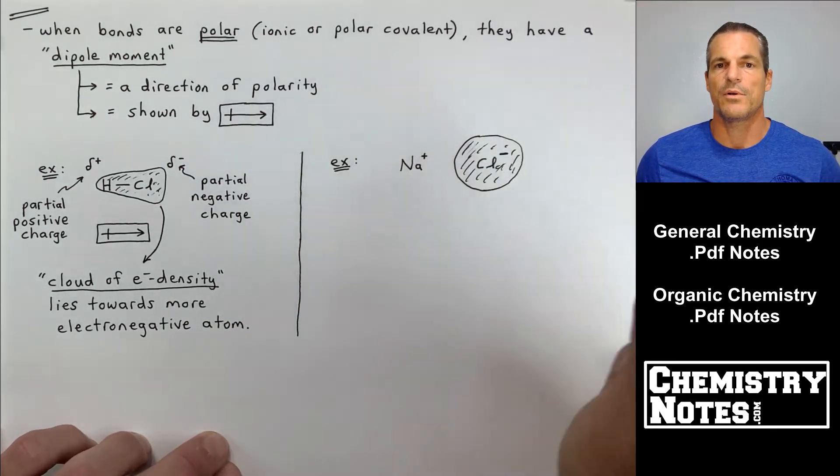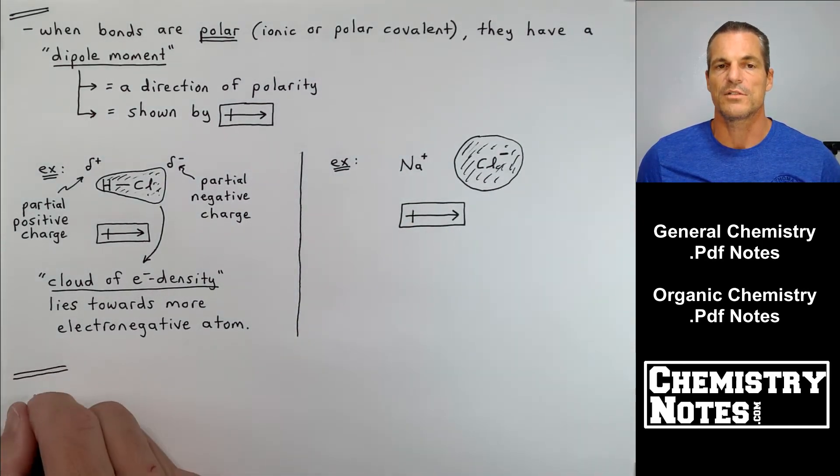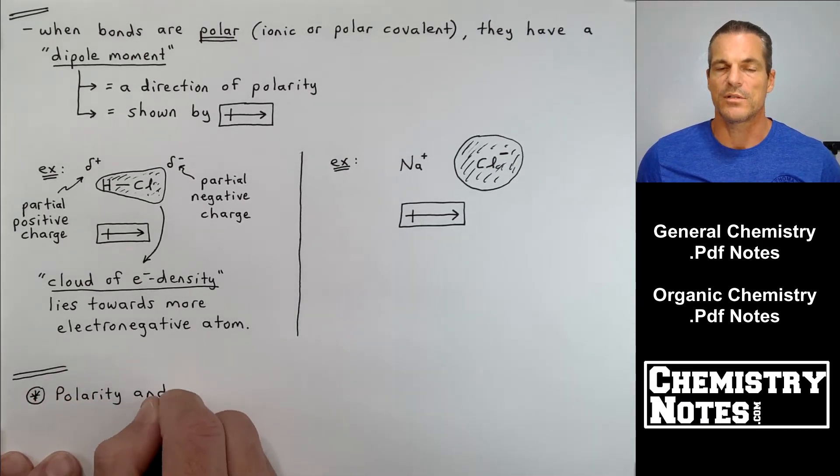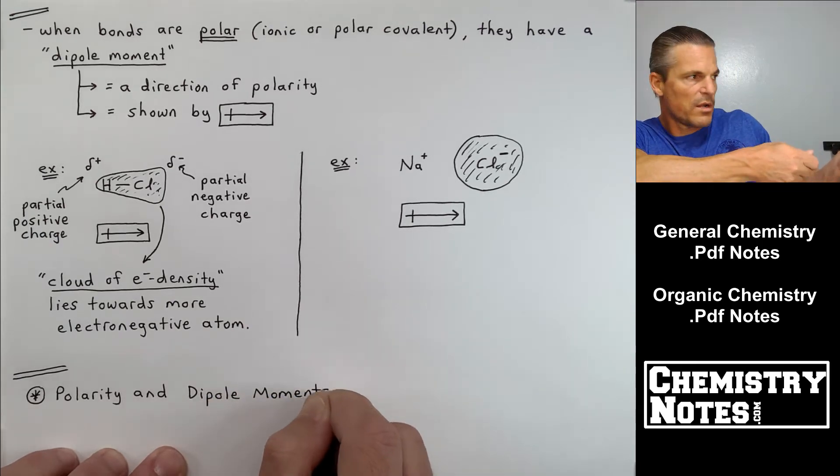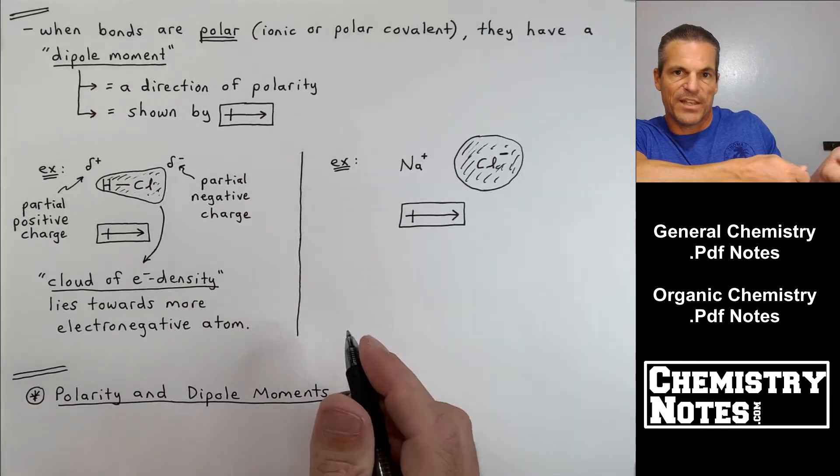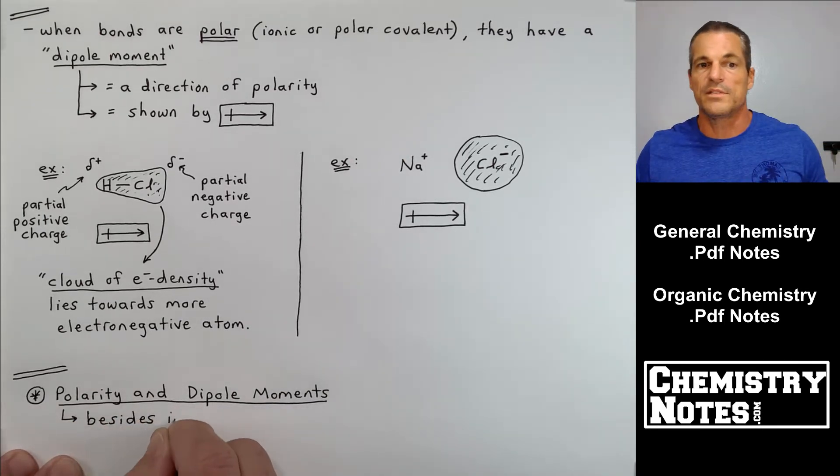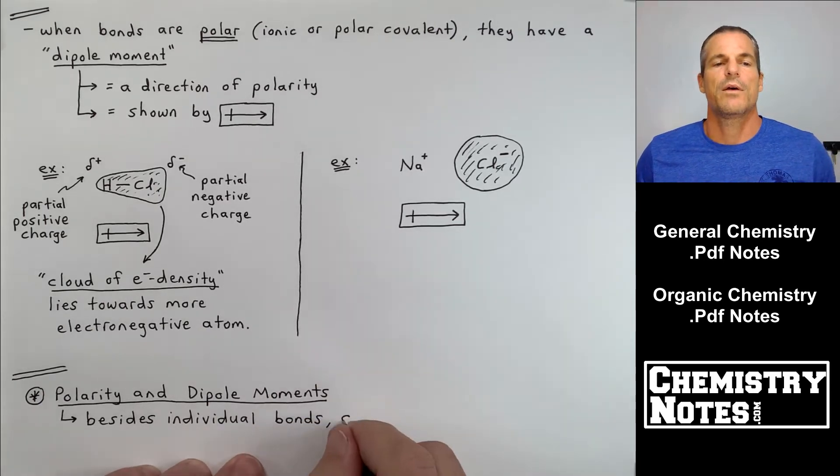So partial positive charge on the left, partial negative charge on the right. And then we can draw our dipole moment towards the direction of the most electron withdrawing atom, Cl. Now look at the next example. I have NaCl, and Na has a full plus charge. Cl has a full minus charge. In the last example, we determined this was an ionic bond with the electrons totally transferred.